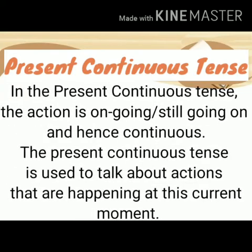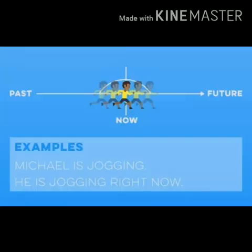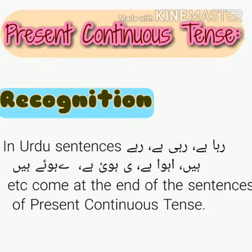Let's study present continuous tense. In this tense, the action is ongoing or still going on, and hence 'continuous'. The present continuous tense is used to talk about actions that are happening at the current moment — actions that are in progress right now. The action started in the past and will end in the future, so we say the work is currently in progress. Example: 'Michael is jogging' — it means Michael is jogging right now.